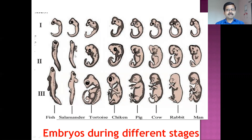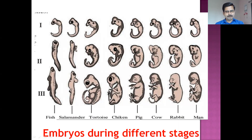Similarly, this is the first stage embryo of the tortoise, this is the second stage embryo of the tortoise, and this is the third stage embryo of the tortoise. Similarly, this is the first stage embryo of the man, this is the second stage embryo of the man, and this is the third stage embryo of the man.